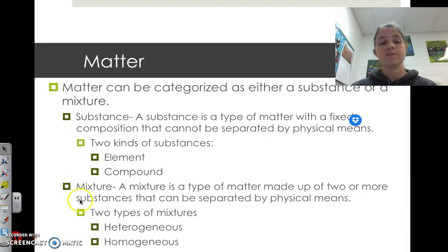The other type of matter is mixtures. A mixture is a type of matter made up of two or more substances that can be separated by physical means, meaning I can instill some process that will separate it into its components. And a mixture can either be heterogeneous or homogeneous. I'll talk about what those two mean in a couple slides as well.